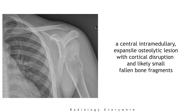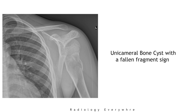This frontal x-ray of a left shoulder shows a central intramedullary expansile osteolytic lesion with an associated cortical disruption and osseous linear fragment in the dependent portion of the lateral aspect. This is consistent with the fallen fragment sign of a unicameral bone cyst.